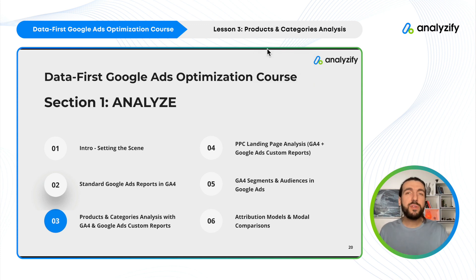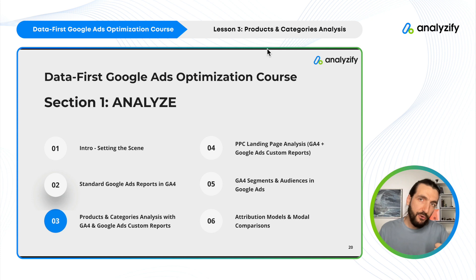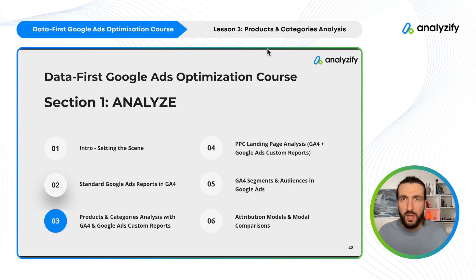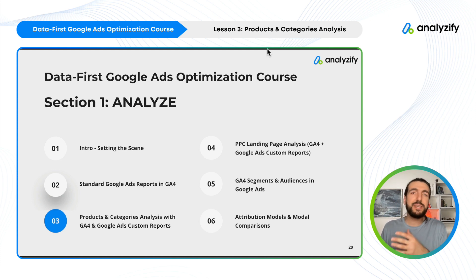In this video, we will analyze products and categories by using GA4 and Google Ads custom reports. Google Ads, especially Performance Max campaigns, is kind of a black box.